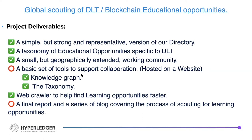The project deliverables: the ones with a green check are done, and the ones with a circle are still remaining. This was because Jenming was not there for the second half and I had to take on all his responsibilities — I volunteered for it and we are still on schedule. Right now we have a simple but strong representative version of the directory, a taxonomy of educational opportunities specific to DLT, and a small but geographically extended community willing to contribute to the knowledge graph.